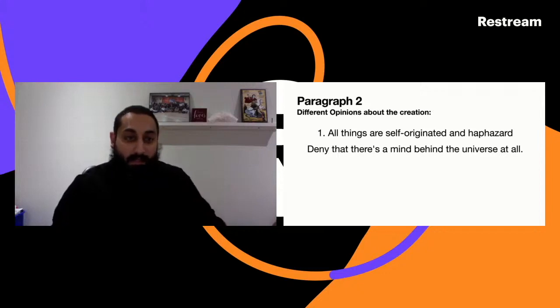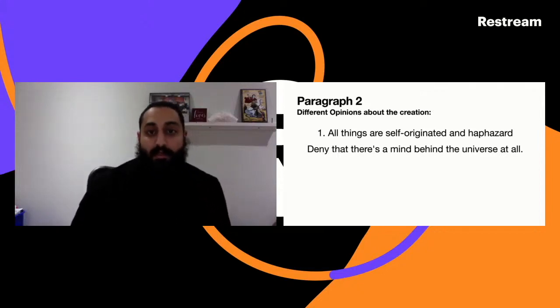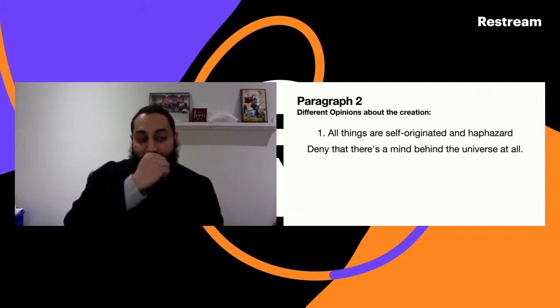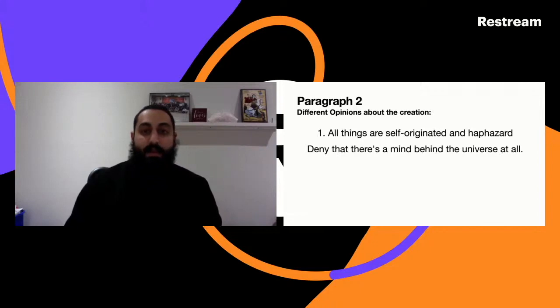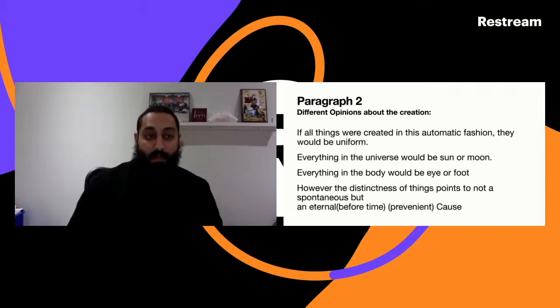Starting from paragraph two, he says let us talk about the different opinions about creation. In his time there are about two or three different opinions about creation. Unfortunately, the first one still exists in our time today, which is what many people refer to as the theory of evolution. The idea is that all things are self-originated and haphazard - things are quite random and they just happen on their own without a creator. This denies that there is a mind behind the universe at all. If this happens, all things would be in this automatic fashion - everything would be uniform, everything would be a sun or a moon, everything in a body would be an eye or a foot.